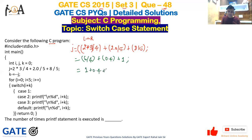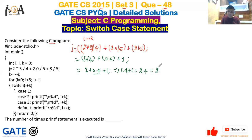So we get 1 plus 0.4 plus 1. Since 0.4 is a double and 1 is an integer, it is implicitly typecasted: 1 + 0.4 = 1.4, then 1.4 + 1.0 = 2.4. But j is an integer, so the value of j is 2. Right now: i = 0, j = 2, k = 0.